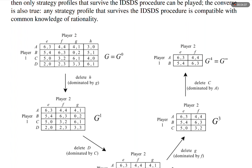In the top-left grid, we have player 1's rows with strategies A, B, C, D, intersecting player 2's columns with strategies E, F, G, H. The payoffs from top-left to bottom-right are: (6,3), (4,4), (4,1), (3,0); (5,4), (6,3), (0,2), (5,1); (5,0), (3,2), (6,1), (4,0).